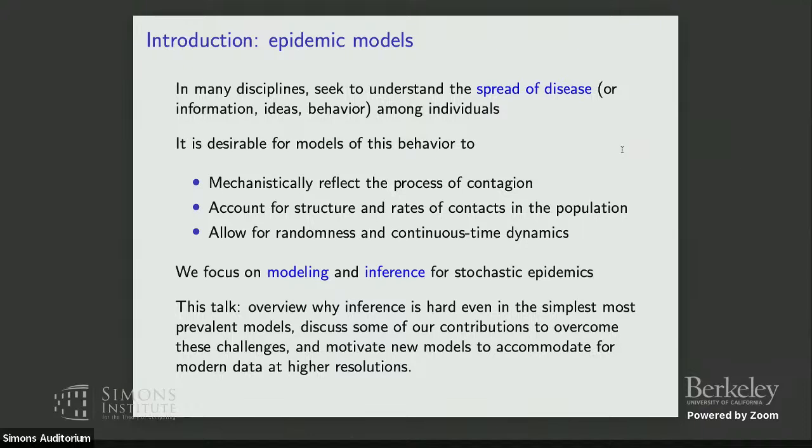An important thing that has come up throughout this workshop is that we would like to account for some kind of structure and rates of contact in the population. We've seen classical models with mass action, well-mixing homogeneity assumptions, and we'd like to see how far we can get in doing inference when we relax some of that. As a statistician, I'm biased toward random stochastic models, allowing for randomness — and I'll focus on the continuous-time setting, which is very interpretable and quite elegant.